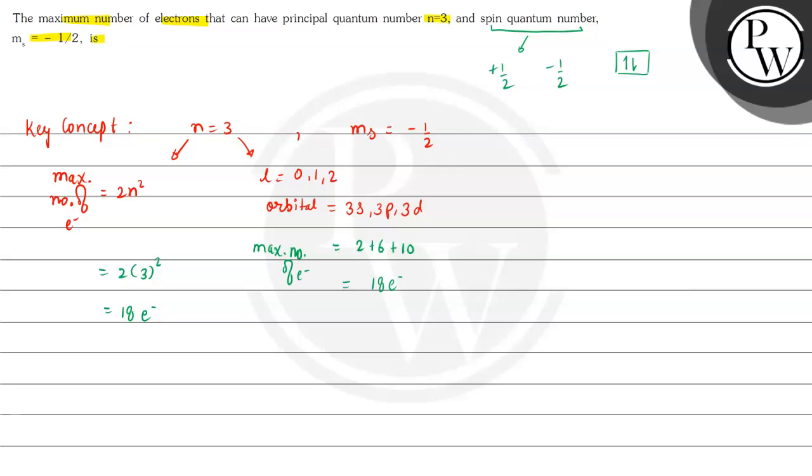half of these are positive and half of these are negative spin quantum numbers. Therefore, the correct answer in this case, with m_s equal to minus half,